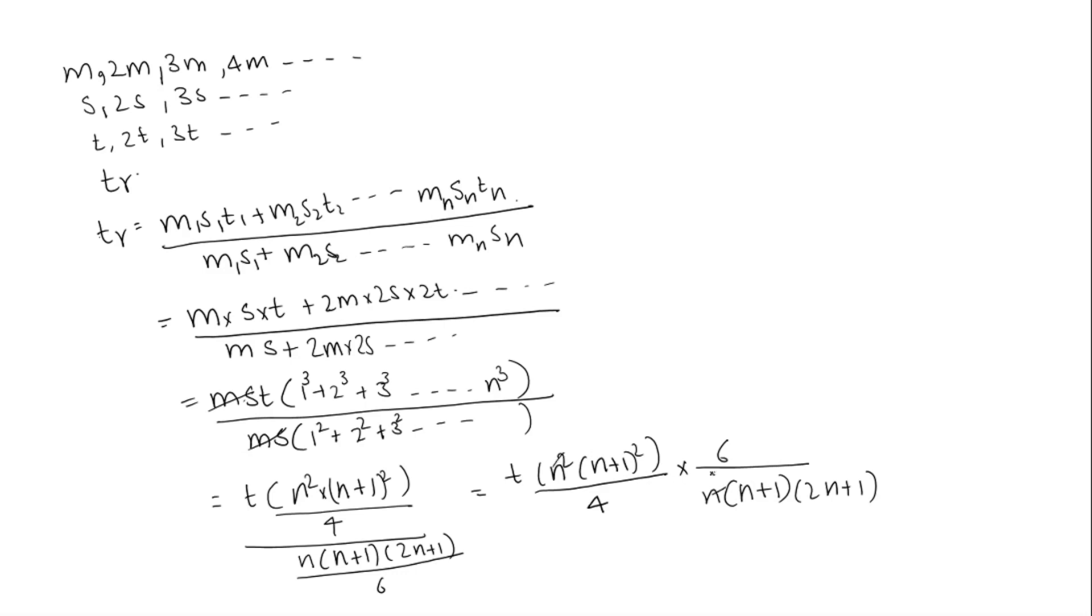N squared by N will get cancelled, N plus 1 whole square and N plus 1 will get cancelled.